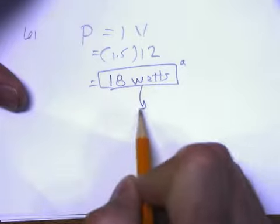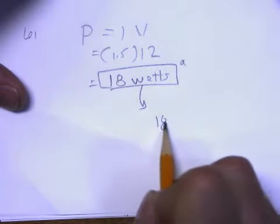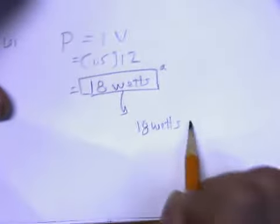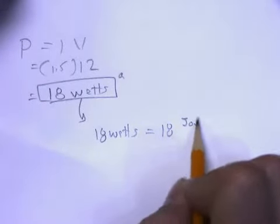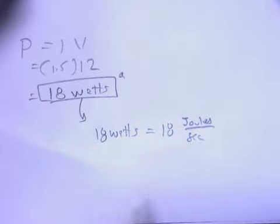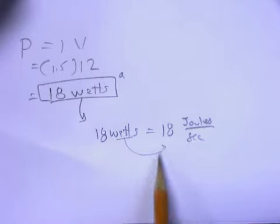Now, the interesting thing about watts, 18 watts is the same thing as saying 18 joules per second. That's what a watt is. A watt is 1 joule per second.